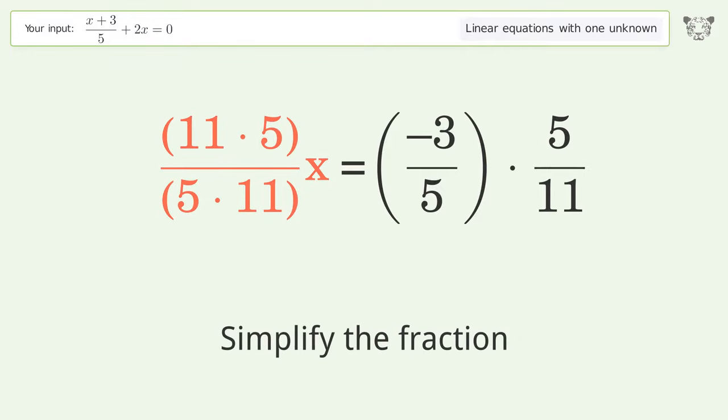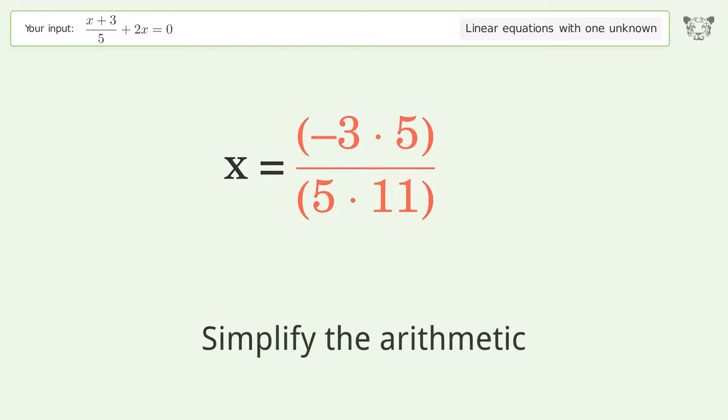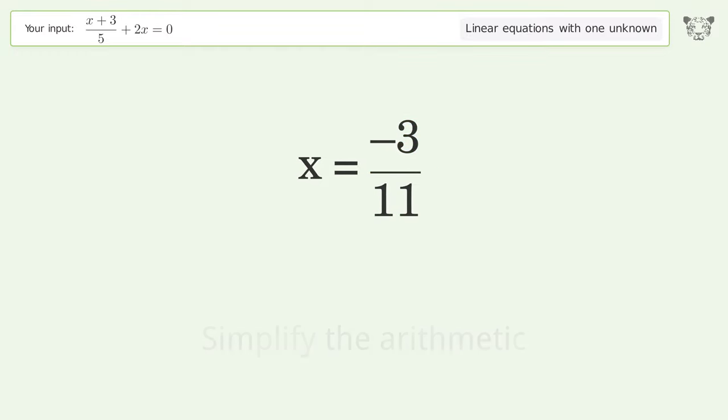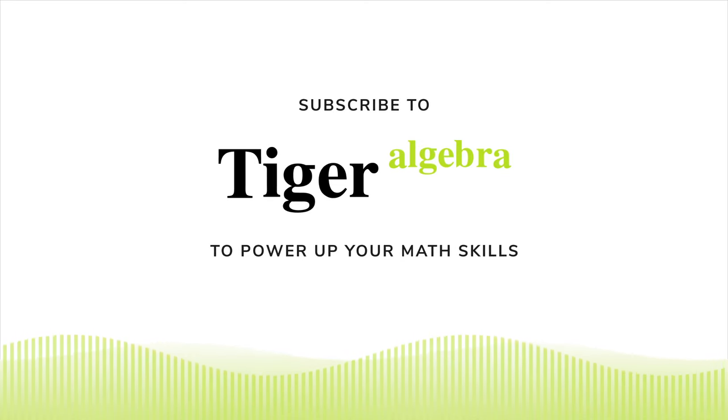Simplify the fractions, multiply the fractions, simplify the arithmetic. And so the final result is x equals negative 3 over 11.